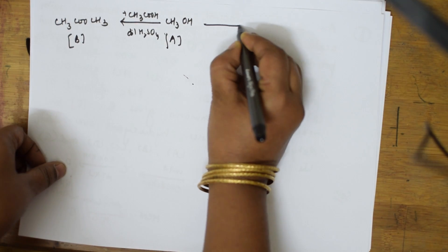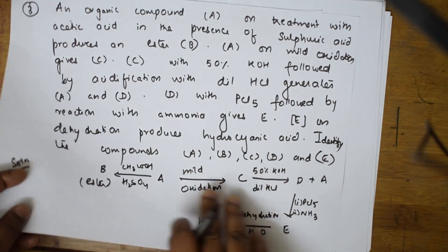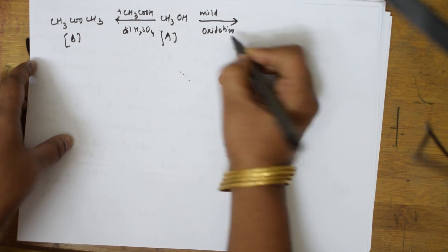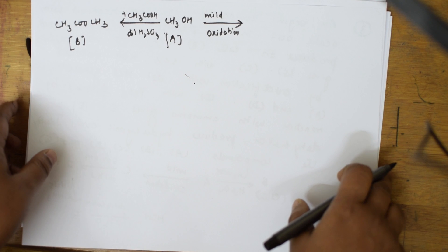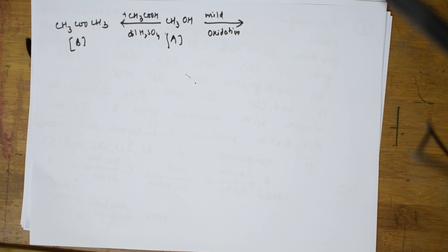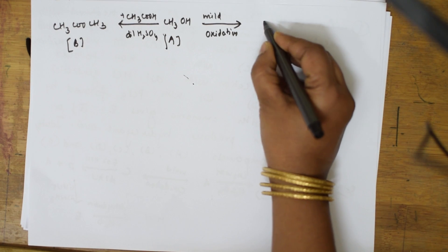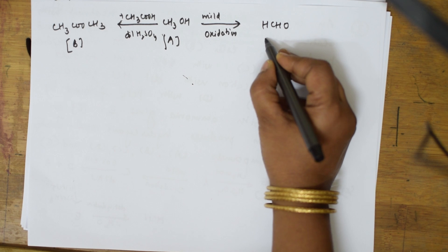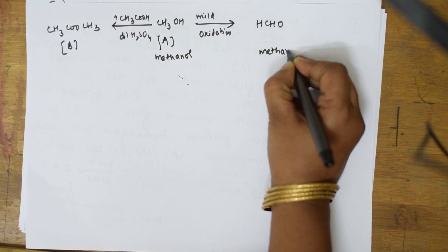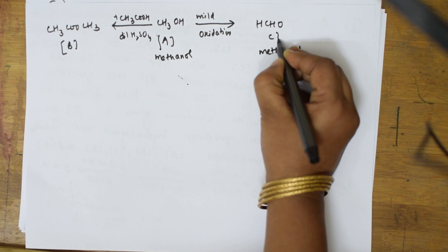Now, this alcohol — what do we do? They said it has undergone mild oxidation. When it undergoes mild oxidation, alcohol and oxidation gives aldehyde — that is what we have studied. So, this one gets converted to aldehyde. Methanol gets oxidized to methanal. This compound is C.